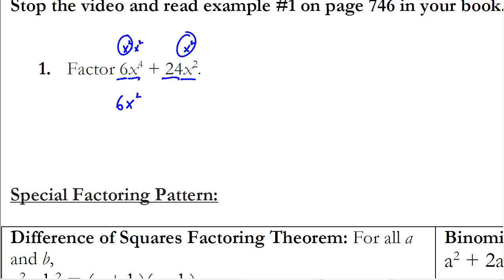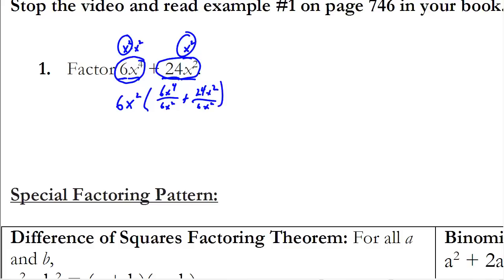So I can pull 6x² out, which means I divide each term by 6x². Taking 6x⁴ ÷ 6x² gives x², and 24x² ÷ 6x² gives 4. Therefore I can rewrite this as 6x²(x² + 4), and I've factored out a monomial.